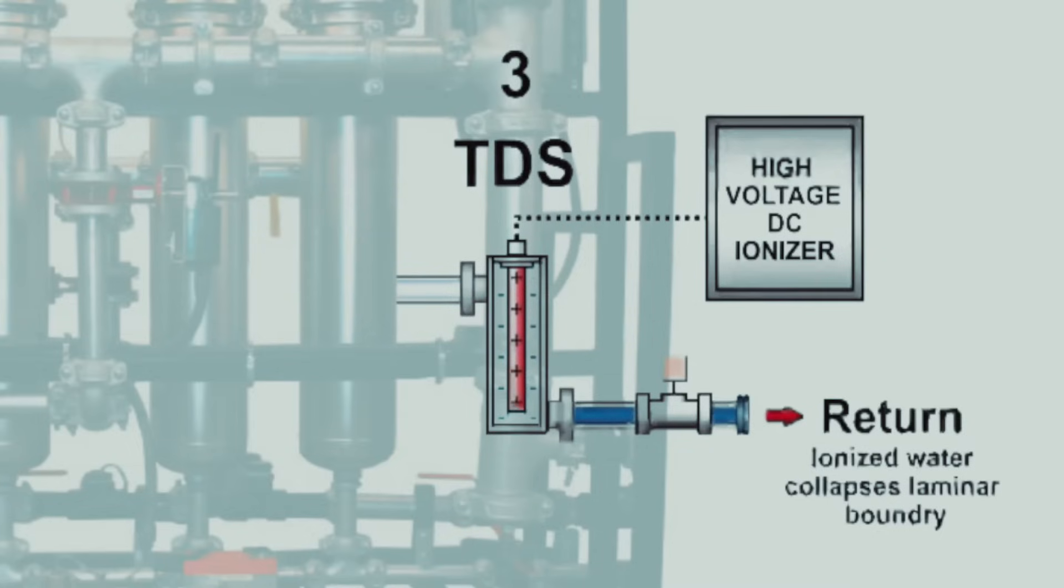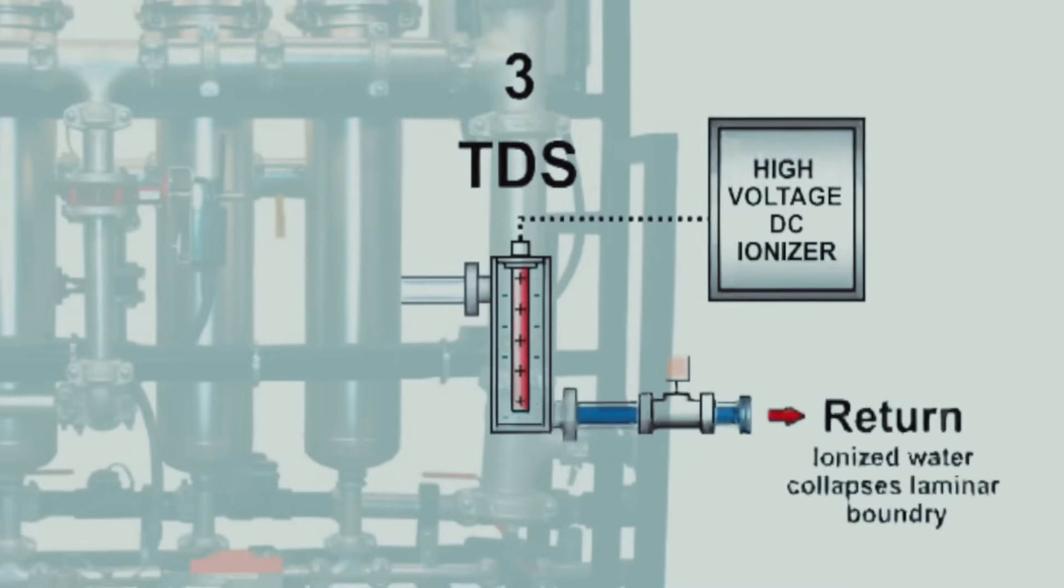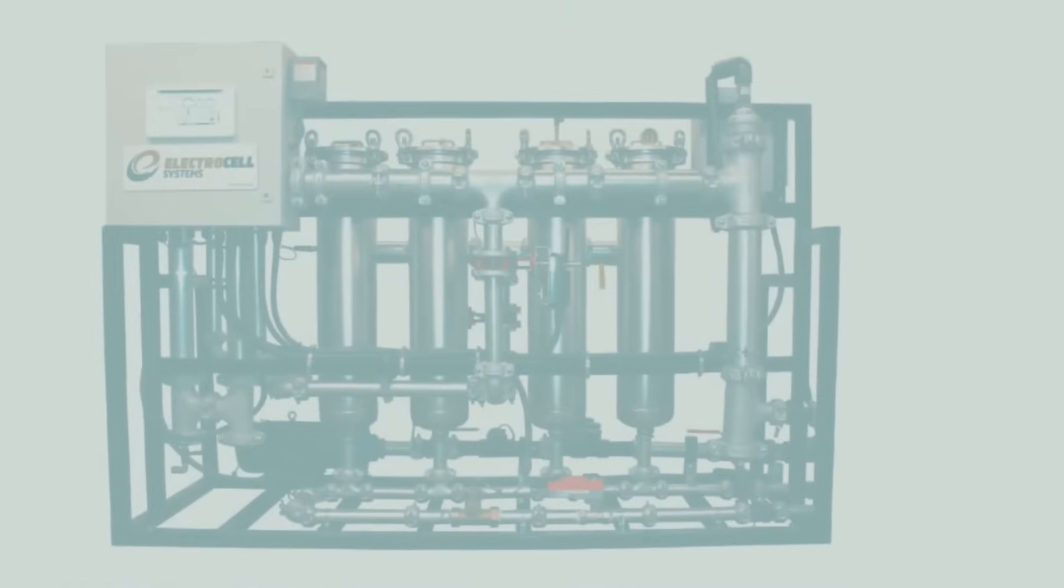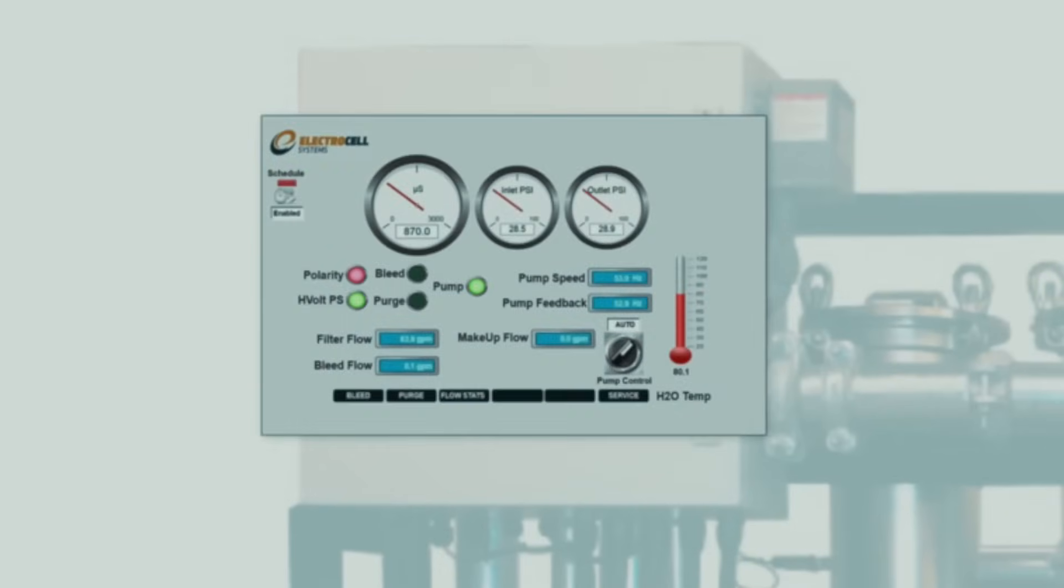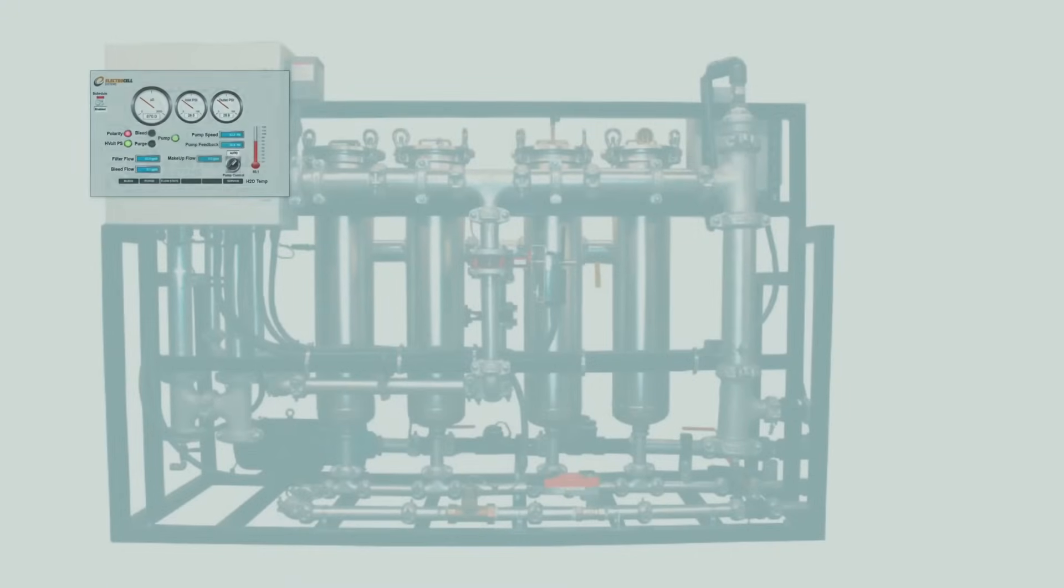The ElectroCell system's touchscreen monitor is user-friendly and fully automated. It includes alarms, trending graphics, controls, and flow totalizing, which can be integrated into your BACnet, LAN, or Modbus network. Additionally, ElectroCell offers remote proactive monitoring at its headquarters to observe the entire loop system's performance.